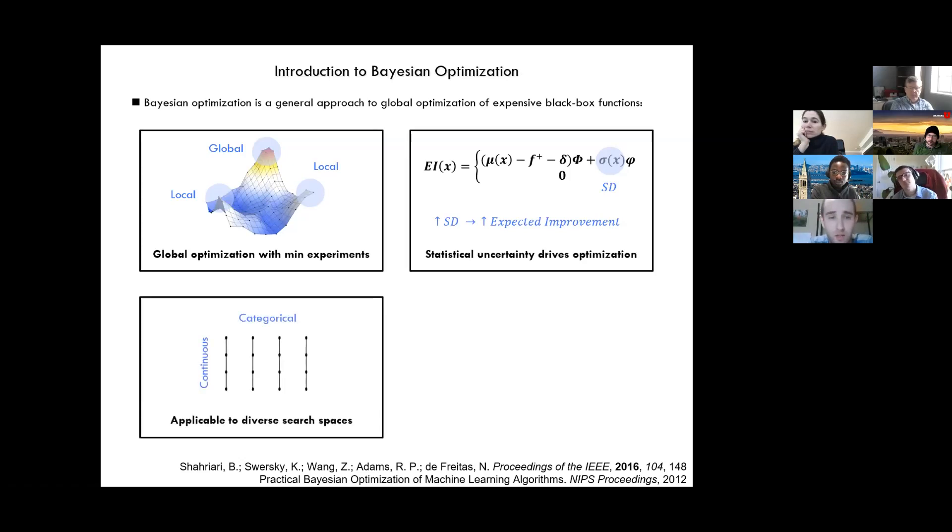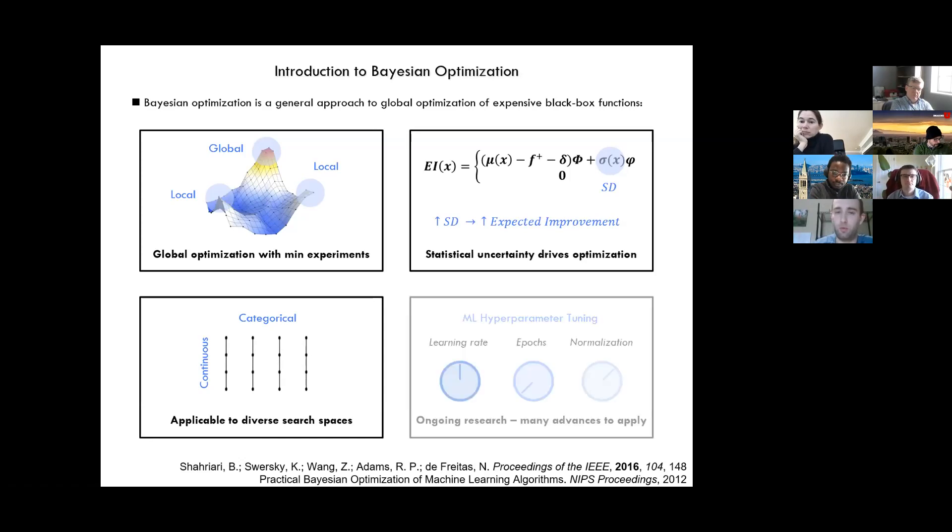Bayesian optimization is particularly useful, we believe, in this context because it's applicable to these diverse search spaces, which include both continuous and categorical variables. And I've just outlined that both of those are really important for optimizing chemical reactions. And another nice property of Bayesian optimization is that it's non-proprietary. So what we've done and what I'll talk about here today is just kind of take some of the general knowledge that's been built up in other areas, such as machine learning hyperparameter tuning, and kind of adapted it and tuned it to work well for chemical reaction optimization.